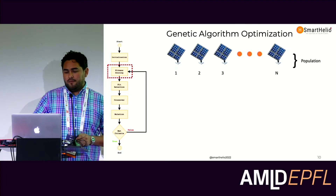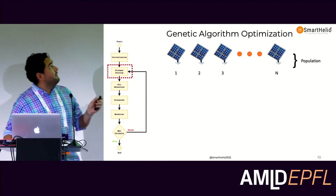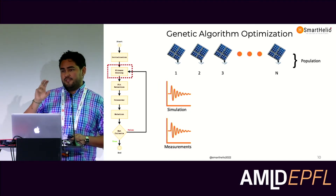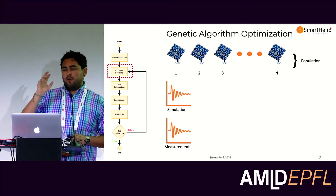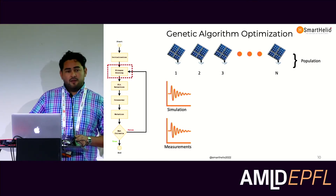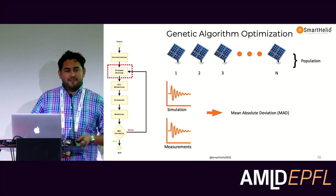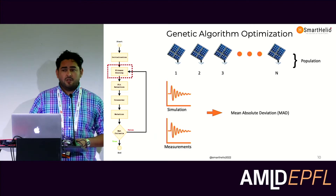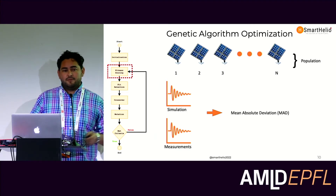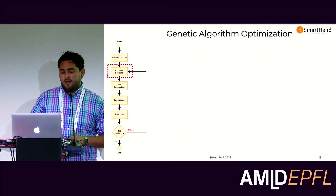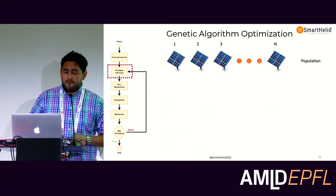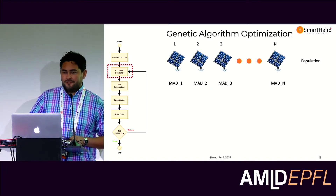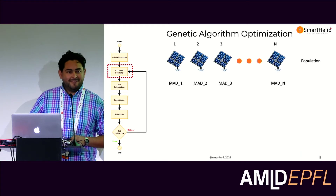Once we create the population, we go to fitness scoring. In this case, fitness scoring means we simulate each system we created and compare it with past measurements. We then set a score for each system — we defined that mean absolute deviation is enough to define a score. At the end, we have the whole population with a certain score assigned to each member.